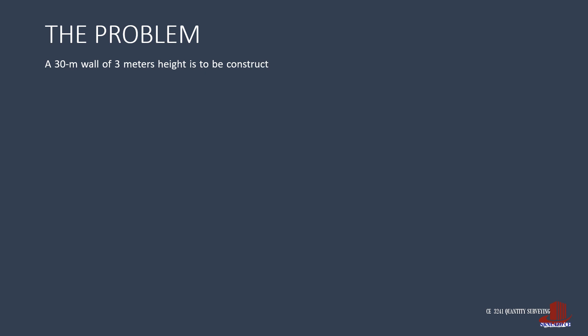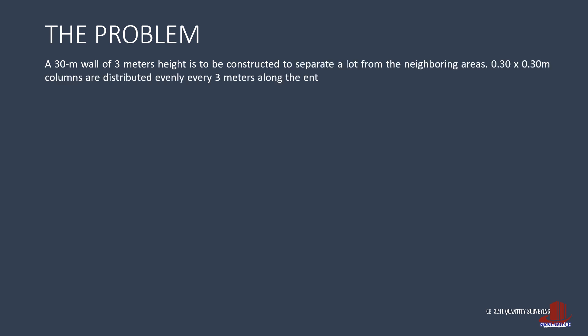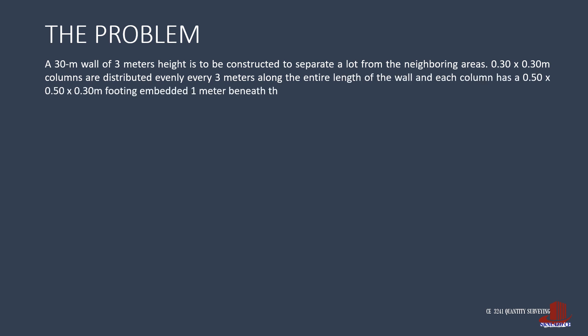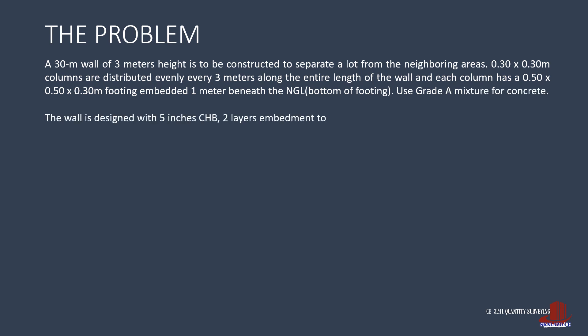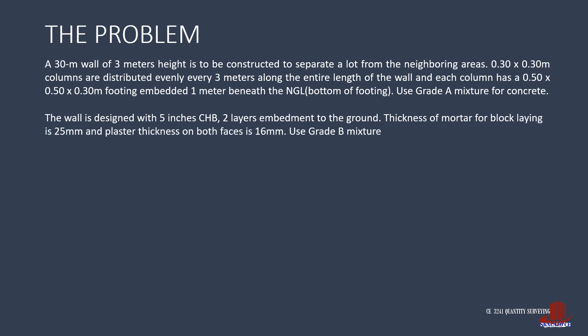The problem defines both the concrete and the masonry works. The first part states: a 30-meter wall of 3 meters height is to be constructed to separate a lot from the neighboring areas. 0.3 by 0.3-meter columns are distributed evenly every 3 meters along the entire length of the wall, and each column has a 0.5 by 0.5 by 0.3 footing embedded 1 meter beneath the natural grade line, measured from the bottom of the footing. Use grade A mixture for concrete.